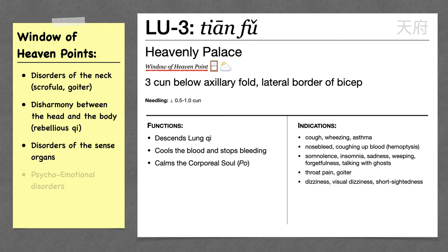Window of heaven points treat psycho-emotional disorders, and here Lung 3 calms the corporeal soul, treating things like sadness, grief, and other shen problems.